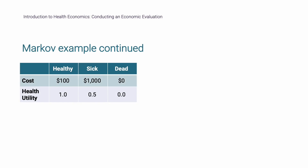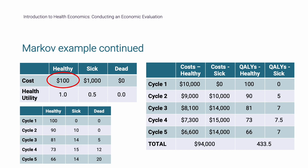Each health state is associated with a cost and a utility value. Patients have lower costs and higher health utility when they are in the healthy state compared to the sick state. We multiply the number of patients in that state by the cost and utility values associated with the state, and calculate the total. To compare between two interventions, the model is run again for the comparator. If the comparator has different transition probabilities, the costs and QALYs will differ. Increasing the probability of staying in the healthy state will decrease costs and increase QALYs. This is a very simplified example intended to introduce basic model structures.